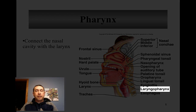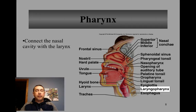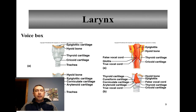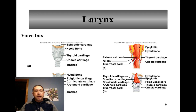From there, the air moves into the laryngopharynx, which carries air into the larynx, or the voice box. The larynx is where the vocal folds or vocal cords are located. It's made of several cartilages, including the thyroid cartilage, which is sometimes called the Adam's apple because in males, when they go through puberty, the thyroid cartilage enlarges due to the increase in testosterone. There's also the cricoid cartilage, along with some other cartilages as well.